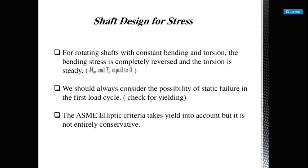Now we will move on to rotating shafts with constant bending and torsion. The bending stress is completely reversed and the torsional stress is steady. We should always consider the possibility of yielding failure in the first load cycle. The ASME elliptical criteria takes yield into account, but it is not entirely conservative.